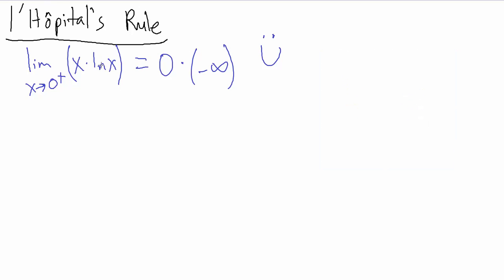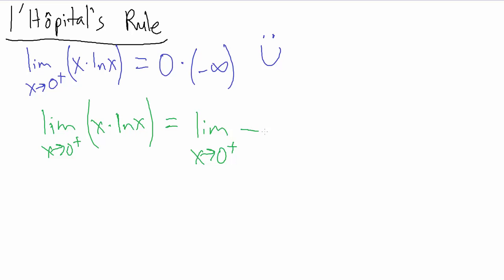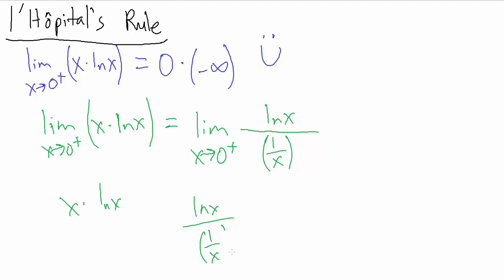We want to do some algebraic manipulations on x times natural log of x to hopefully get one of those indeterminate forms. So we take the limit as x goes to 0 from the positive side of x times natural log of x, and rewrite it as natural log of x divided by 1 over x. Why? Because dividing by something is the same as multiplying by its reciprocal. Dividing natural log of x by 1 over x is the same as multiplying natural log of x by x. So x times natural log of x equals natural log of x divided by 1 over x.